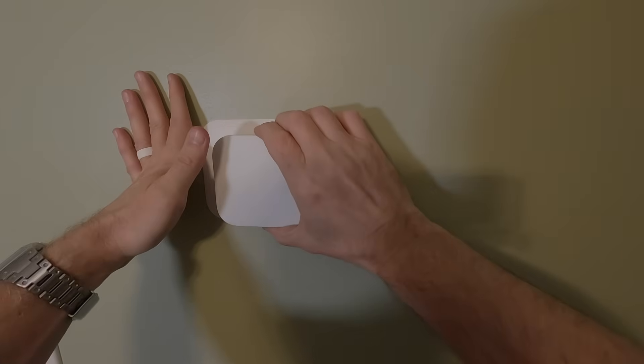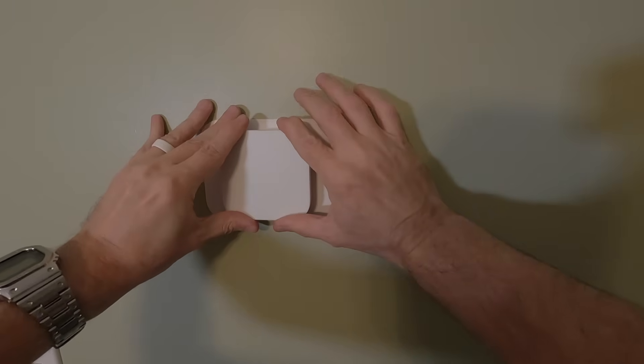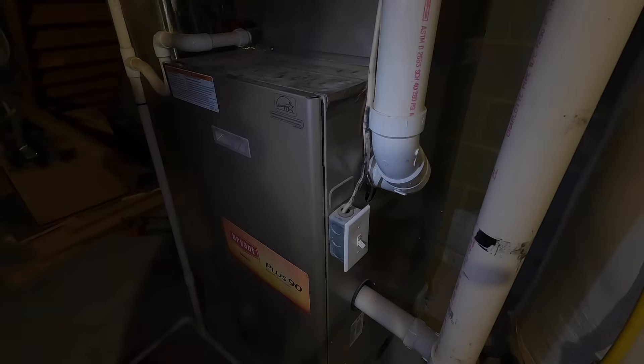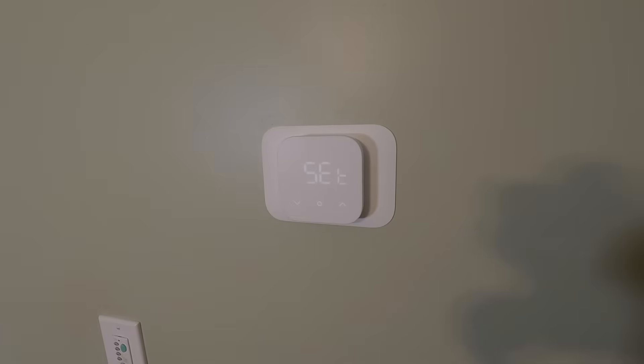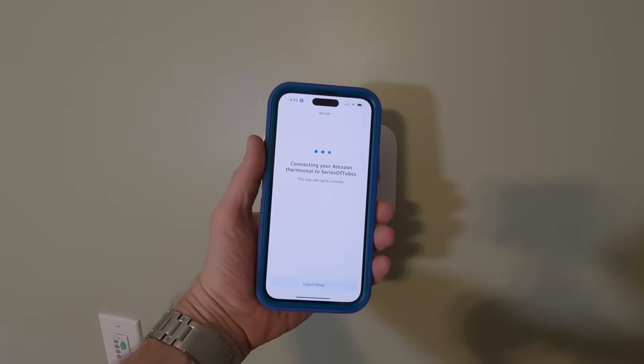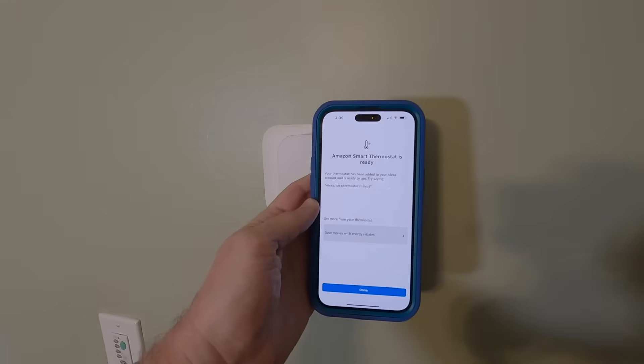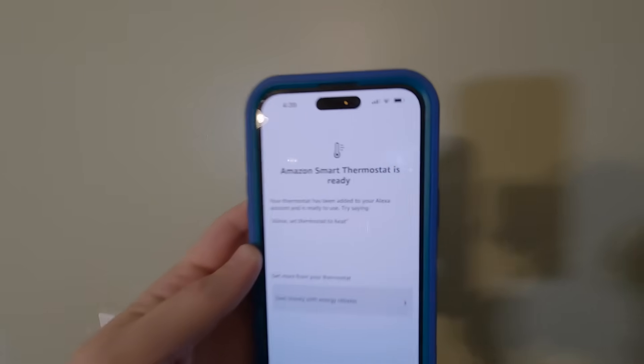Close everything up. Connect your smart thermostat. Turn the breaker on. Flip the switch. Yes! Success! You want this to say set or a temperature. Mine said set. Follow the instructions. You're good to go.